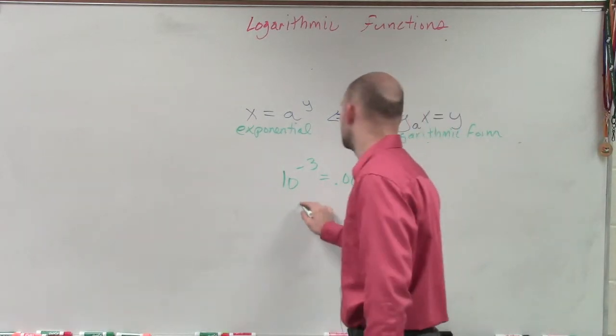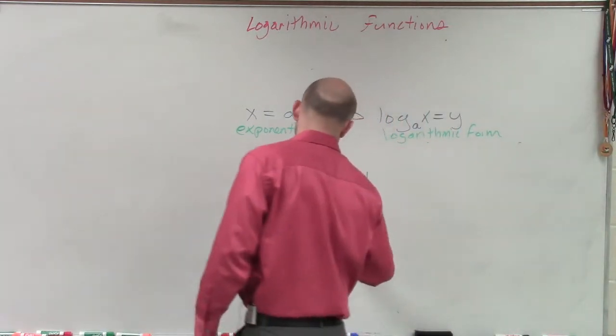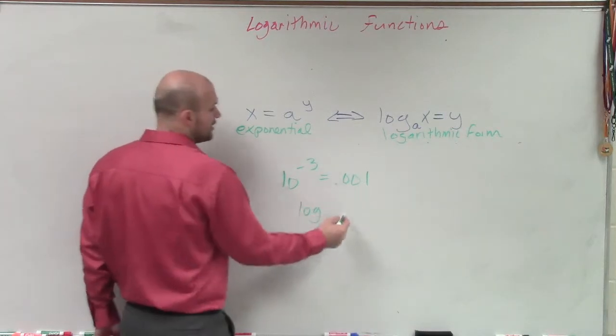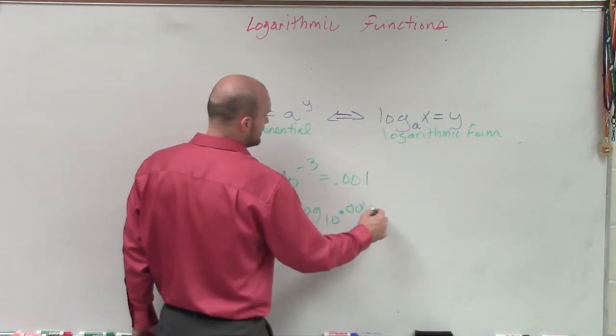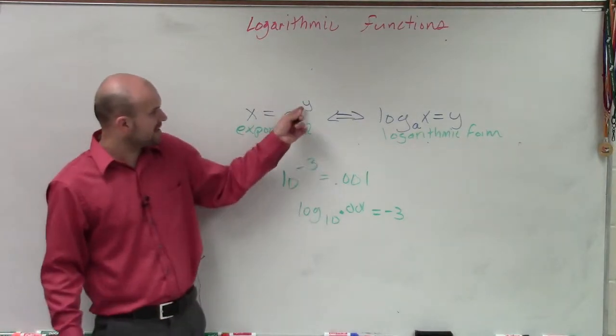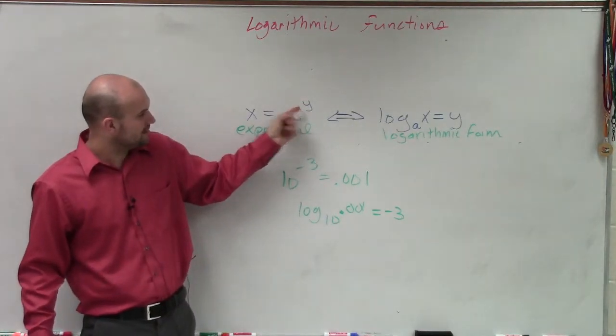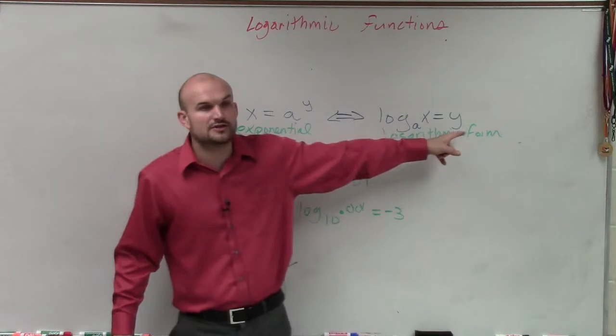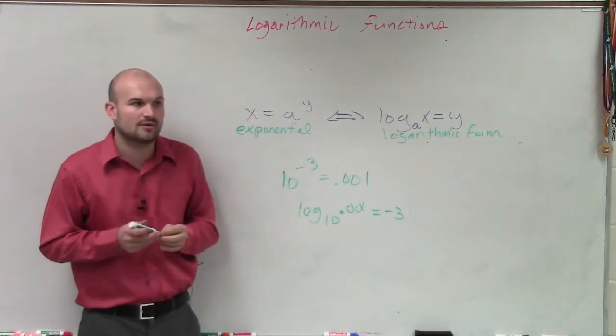we know that's going to be log base 10, and then of 0.001 equals negative 3. Because we say whatever our exponent y is, which is negative 3, is now going to turn to that y over there. So that's going to be exponential form.